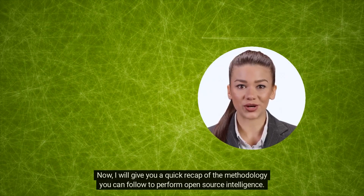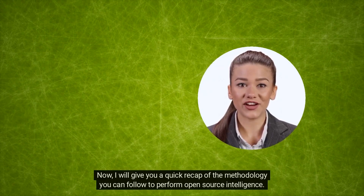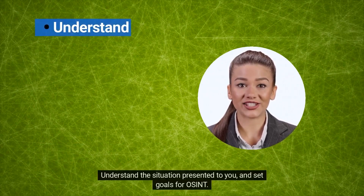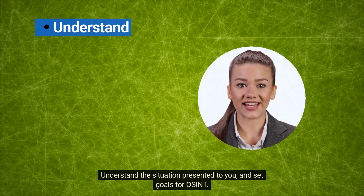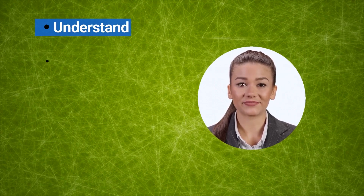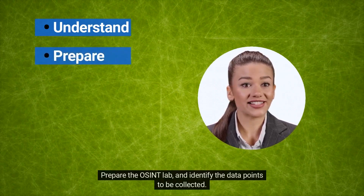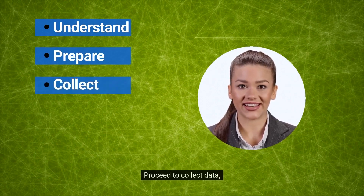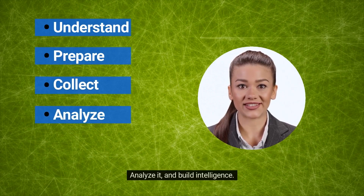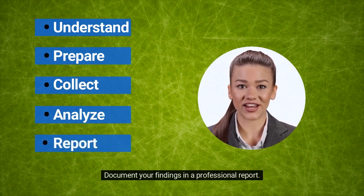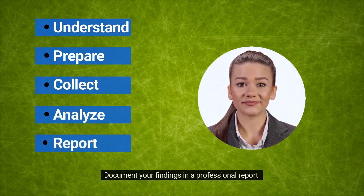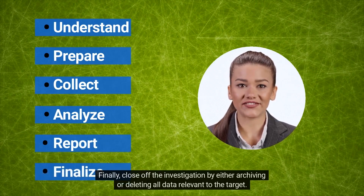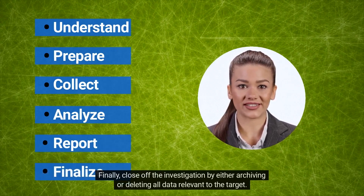Now, I will give you a quick recap of the methodology you can follow to perform open source intelligence. Understand the situation presented to you and set goals for OSINT. Prepare the OSINT lab and identify the data points to be collected. Proceed to collect data. Analyze it and build intelligence. Document your findings in a professional report. Finally, close off the investigation by either archiving or deleting all data relevant to the target.